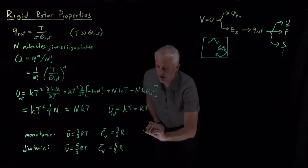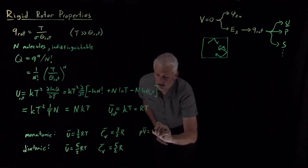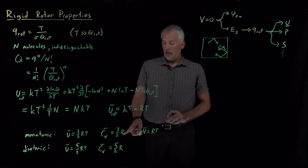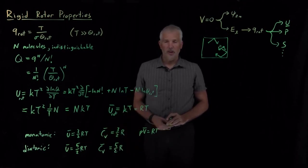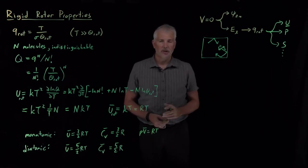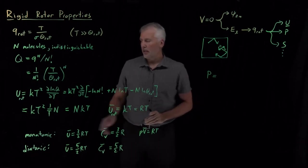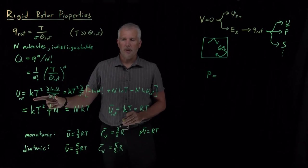We also know about a monatomic ideal gas that pressure times volume equals RT. So, the energy and the heat capacity both changed when we started including rotational motion, so let's see what happens to the pressure of an ideal gas when we include this rotational motion. To do that, we need to back up to this step and begin with another thermodynamic connection formula.